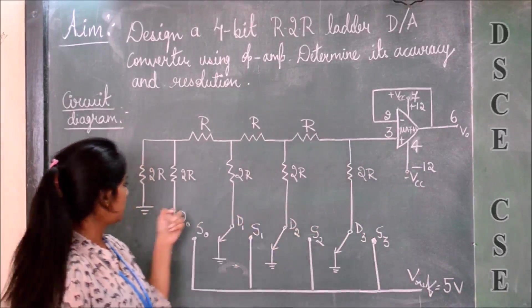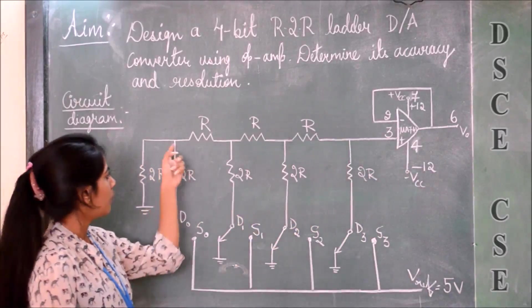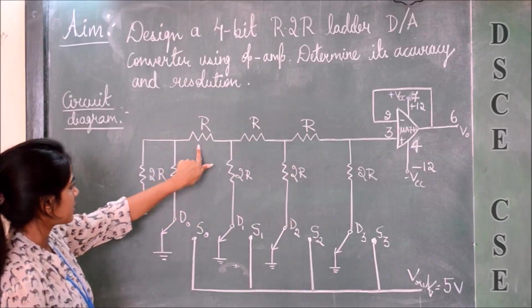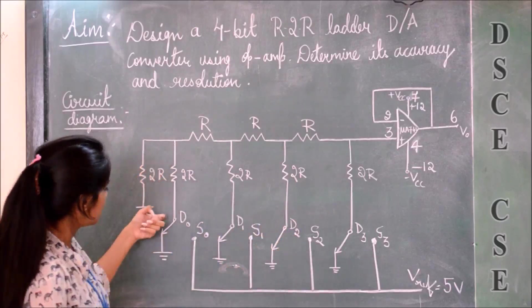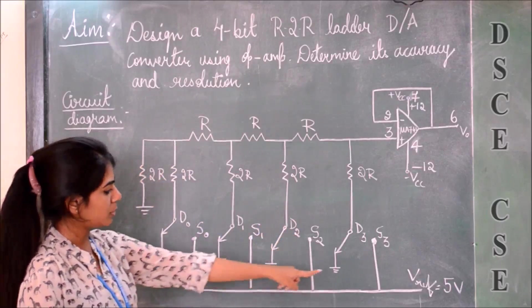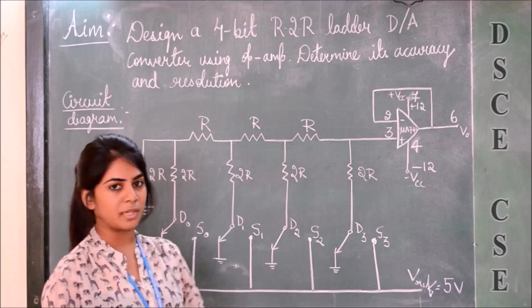We are going to be using five 2.2 kilohm resistors. One is connected to the last resistor and is grounded. The next four are connected in parallel and are connected to the Vref voltage, which is 5 volts.